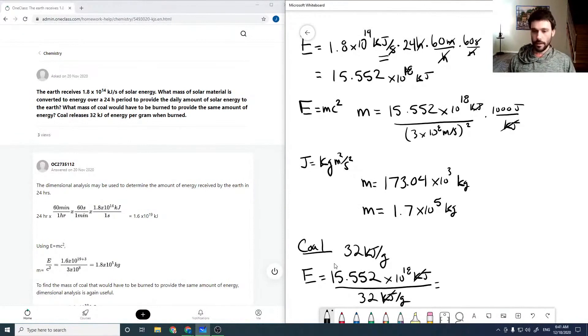And then if we run this through our calculator, we would get 4.86 times 10 to the 17 grams. And it doesn't ask for a specific unit, so that should be fine. And again, two significant figures would be 4.9 times 10 to the 17 grams.